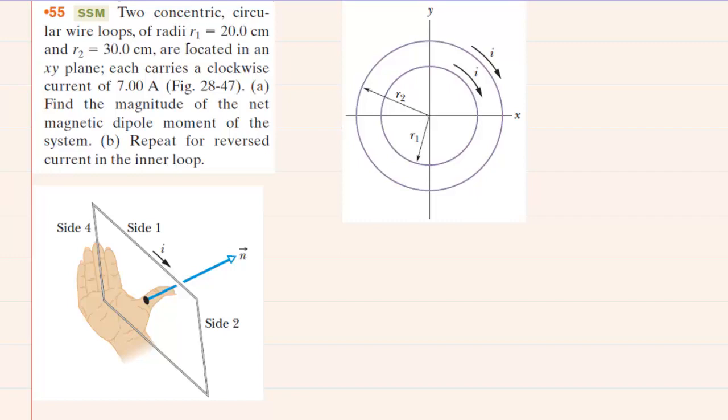In part A of this question, we need to calculate the net magnetic dipole moment of this system of two concentric circular wire loops.